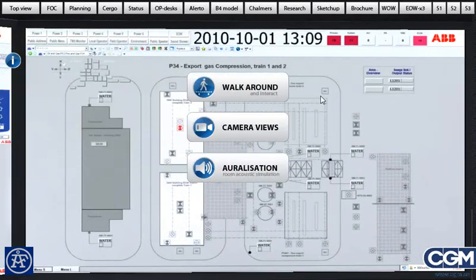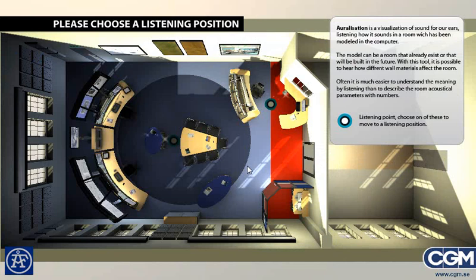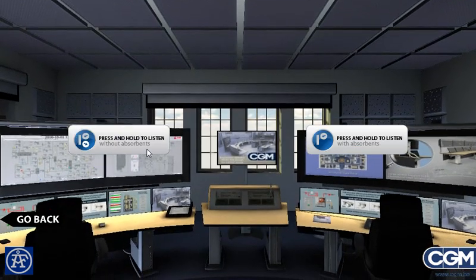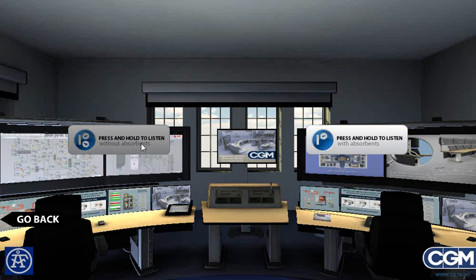Press Q again to access the start menu. This time press Auralization. The Auralization has two listening positions. If you press the left one, the camera flies to the specific view and you have the option to listen to the difference with and without sound absorbance.